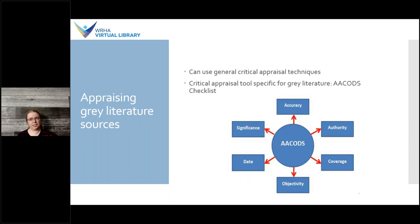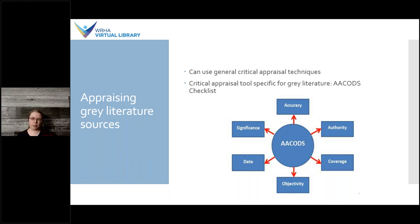In terms of appraising sources of grey literature, you can use a general critical appraisal technique — we've had a webinar on that which I recommend checking out on our YouTube channel. There are also critical appraisal tools specifically for the grey literature. One example is AACODS, which stands for Accuracy, Authority, Coverage, Objectivity, Date, and Significance. This checklist involves reviewing the document itself as well as information available about its provenance, to understand whether you can trust a particular source for whatever you're using it for.